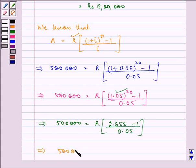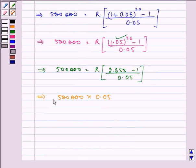Which further implies 5,00,000 into 0.05 divided by 1.655 is equal to R. That on simplifying gives us the value as Rs. 15105.74 as the periodic payment.